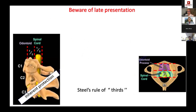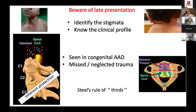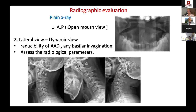Beware of late presentations. Steel's rule of thirds indicates there is significant space available, so patients often present late. Don't miss stigmata of CVJ anomaly such as low hairline, neck deformity, or mild torticollis — these should prompt suspicion of CVJ pathology.